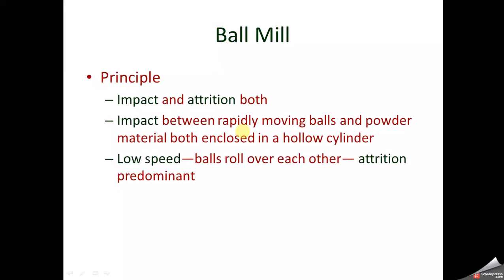Moving forward to ball mill — the basic principle on which a ball mill works is a combination of impact and attrition. In a cylindrical metallic container there are lots of balls which are rapidly moved. The impact between the rapidly moving balls and the powder material, both enclosed in the hollow cylinder, creates impact. At low speed, the balls roll over each other, producing the attrition effect.